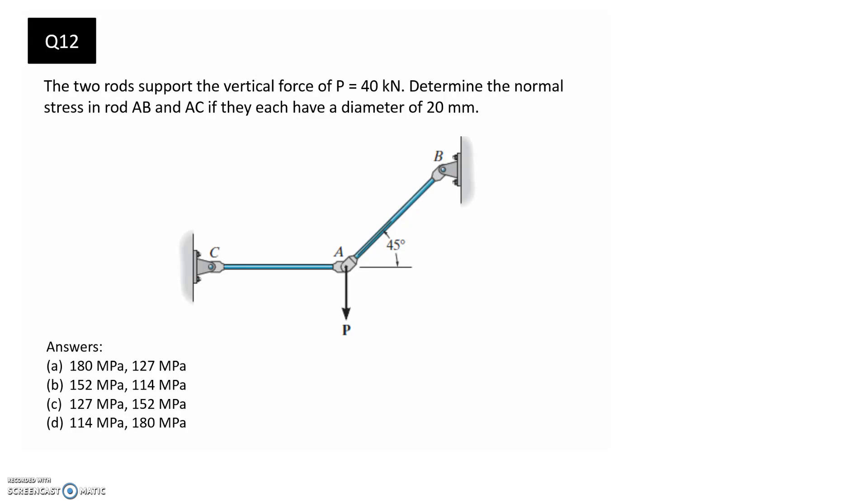The first thing we're going to do is draw a free body diagram to solve for the internal force in both of our rods. Once we've got that, we should be able to perform our stress calculations, where we know normal stress is equal to the force divided by the area, and that should give us one of these answers to the question.